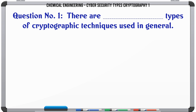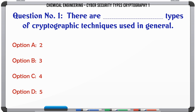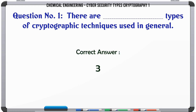How many types of cryptographic techniques are used in general? A) 2, B) 3, C) 4, D) 5. The correct answer is 3.